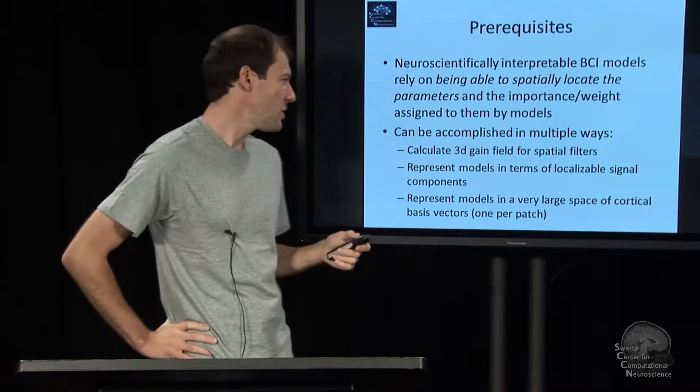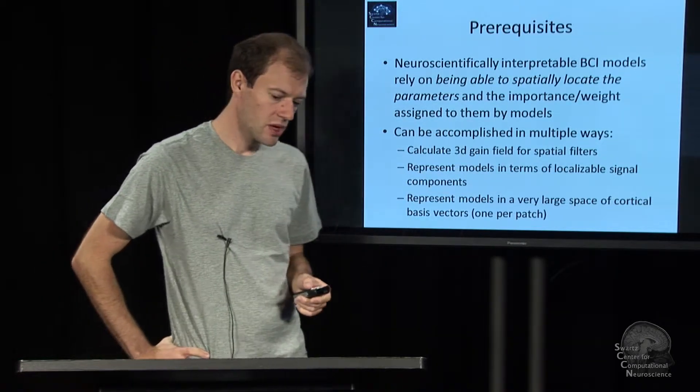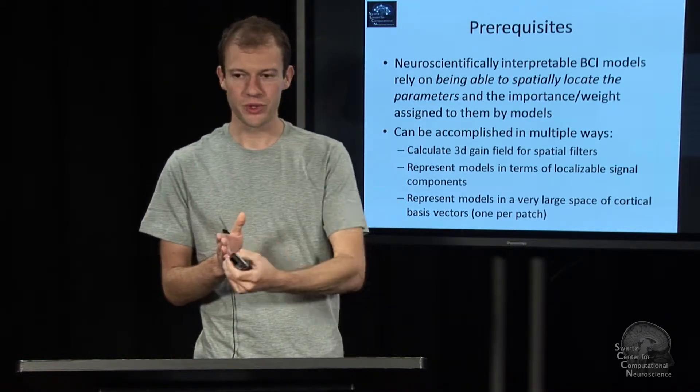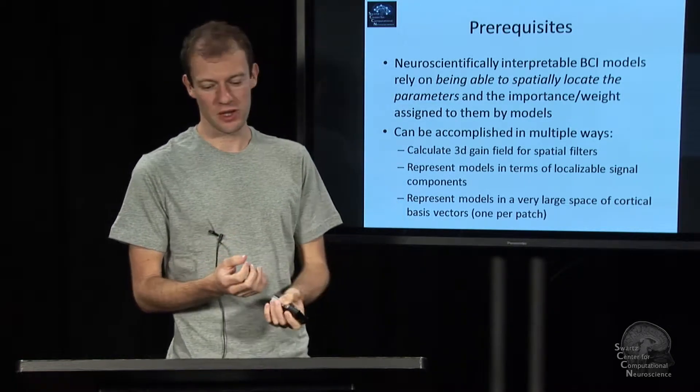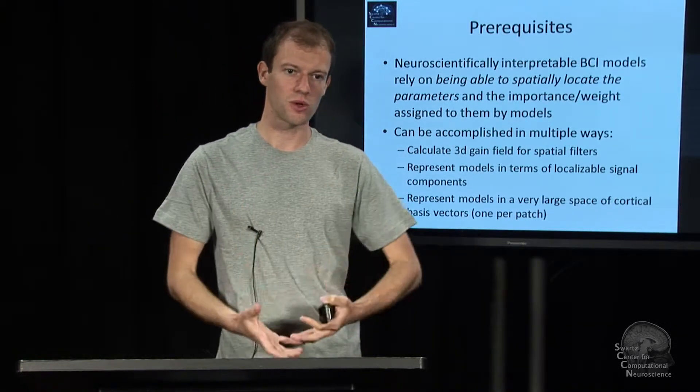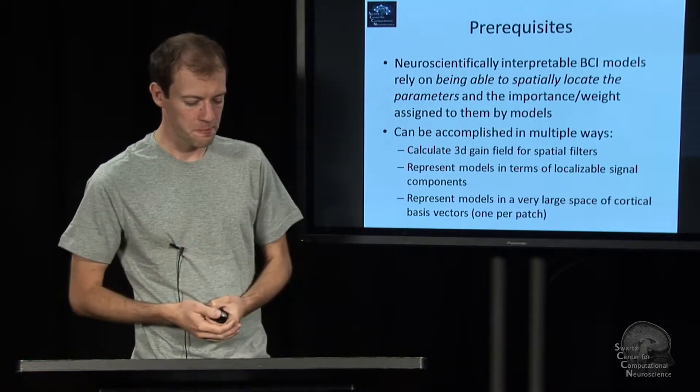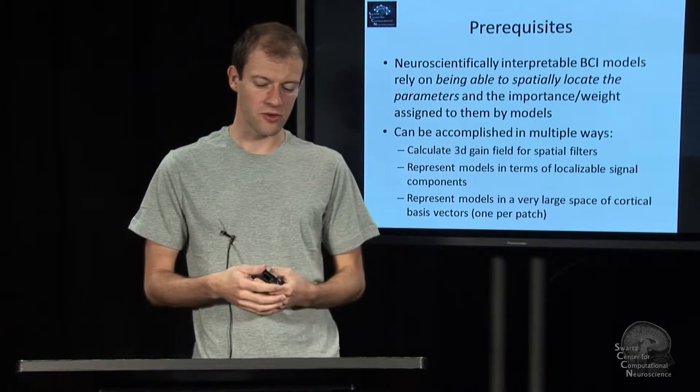This can be done in various ways. One approach is if you have a spatial filter, there are techniques to calculate which zones in the brain they emphasize the most, where they have the highest gain. What it requires is some sort of forward mapping for the brain of the person you're working with, or to use some kind of general purpose forward model.